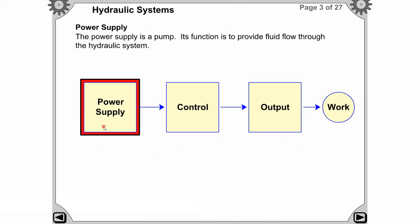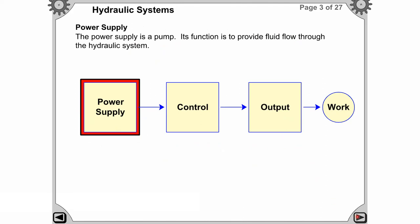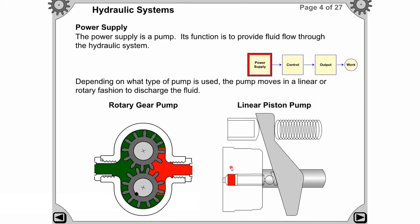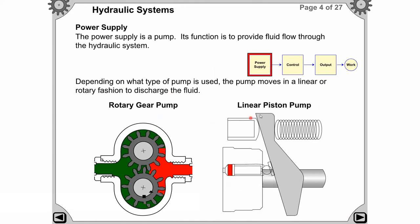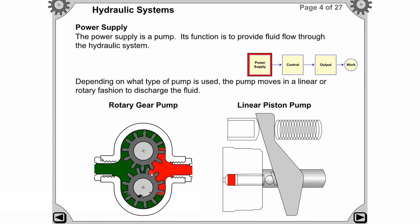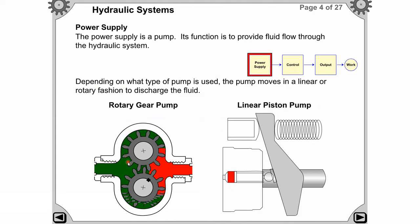The first segment is the power supply segment — the power supply is a pump. Its function is to provide fluid flow through the hydraulic system. There are two types of pumps: the rotary gear pump and the linear piston pump. The description of each pump will be discussed in later sessions.